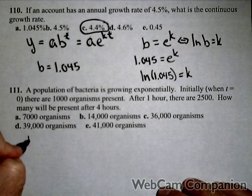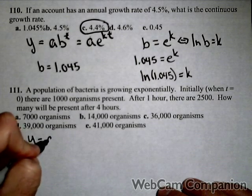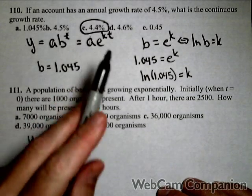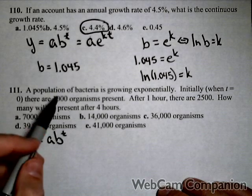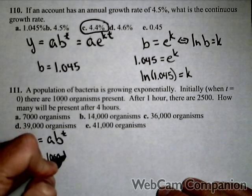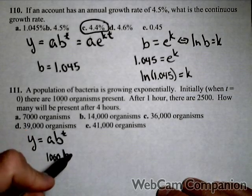Okay, so let's go ahead and set up our exponential model. I'm going to use AB to the t, but you could also use the AE to the Kt, that's fine. I already know my initial amount. It's 1,000, and what I need to find is B.